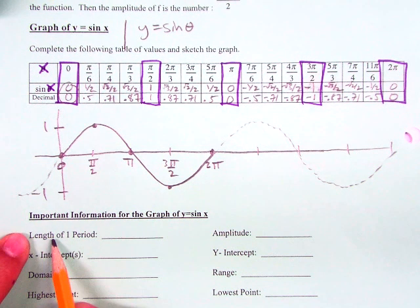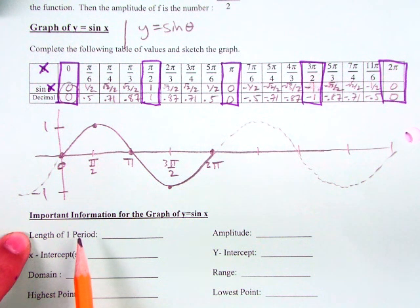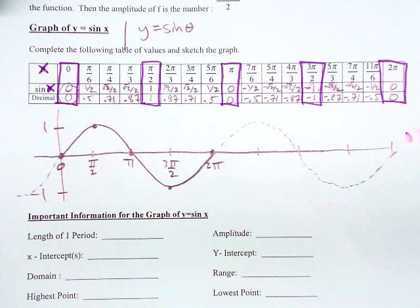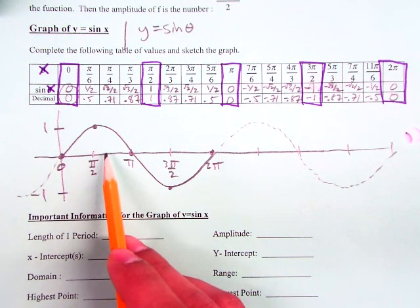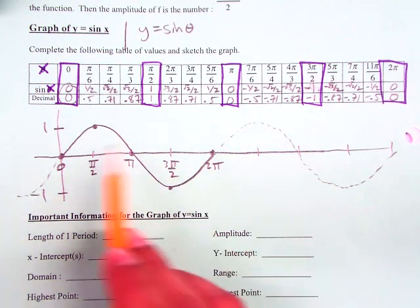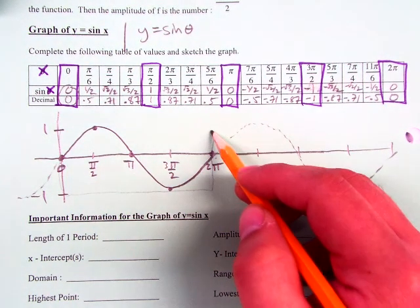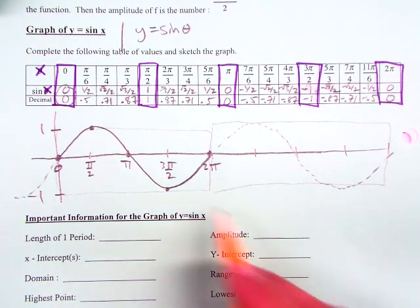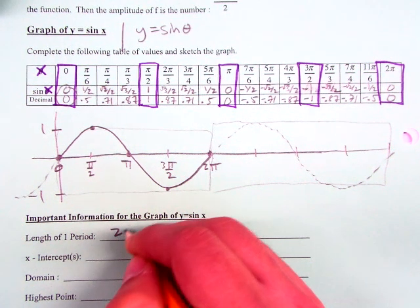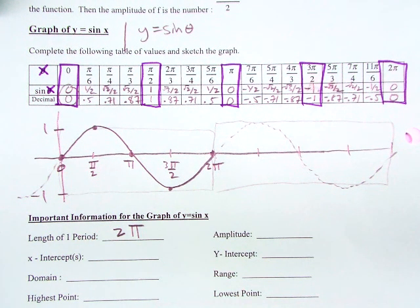Now, the length of one period, we talked about this going over the homework. It's how long it takes for the whole graph to repeat. So if I'm starting at 0, when does it really start to repeat everything? So from 0 to 2 pi, do you guys see how there's a copy of that following it? So from 0 to 2 pi, the length of that is 2 pi.